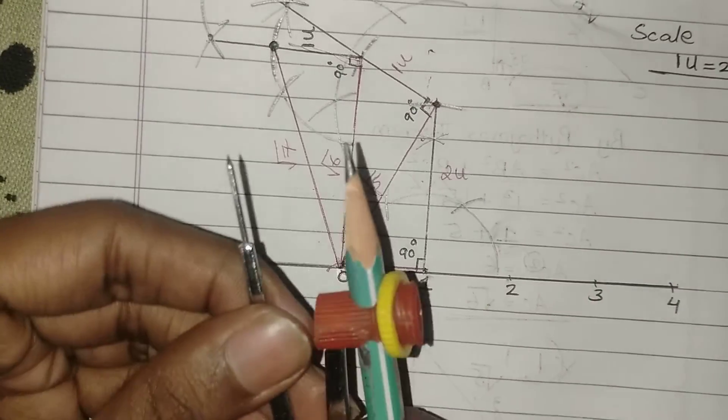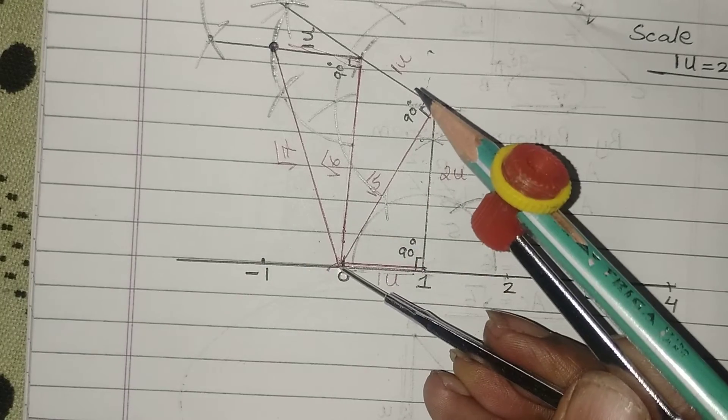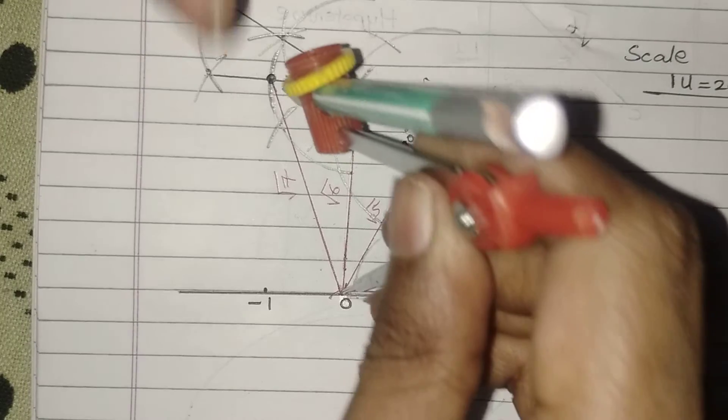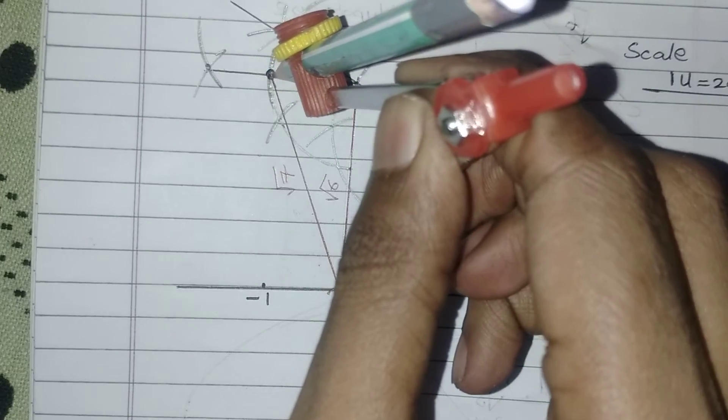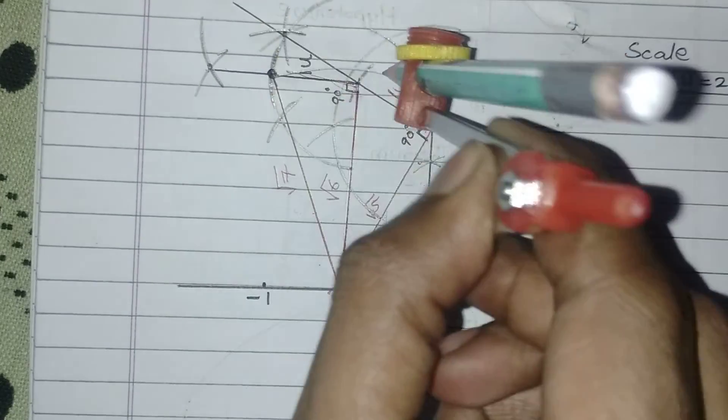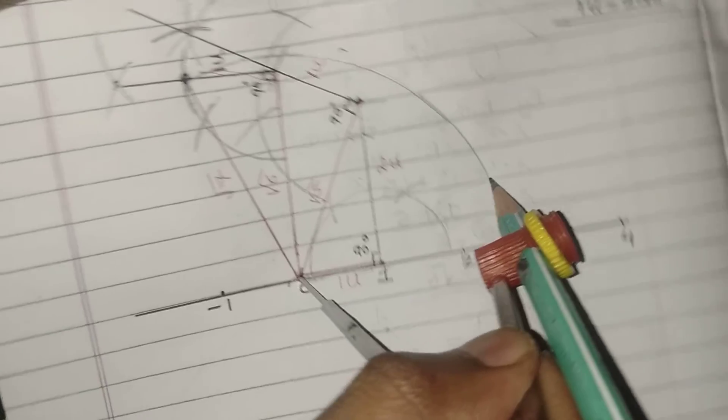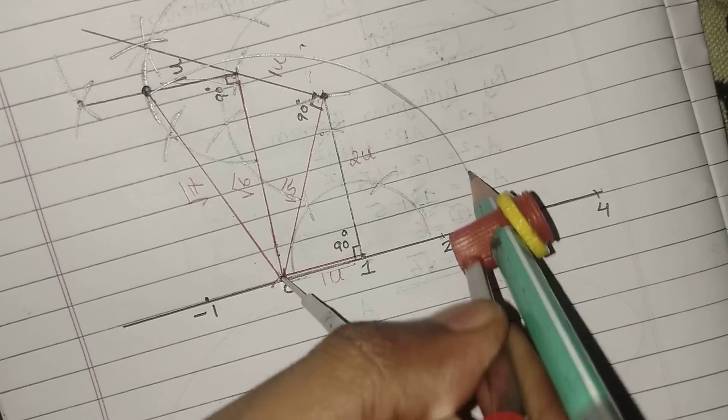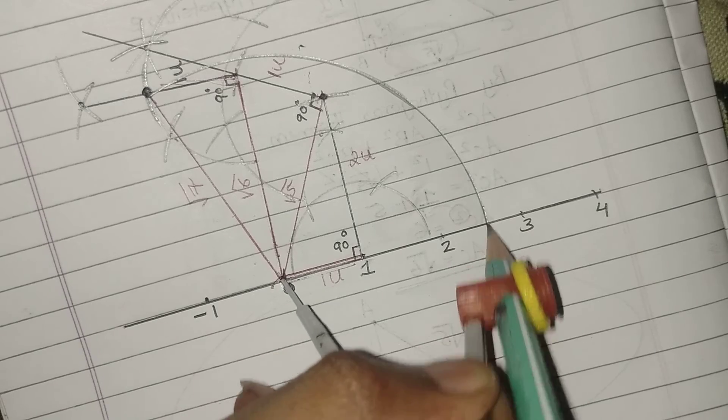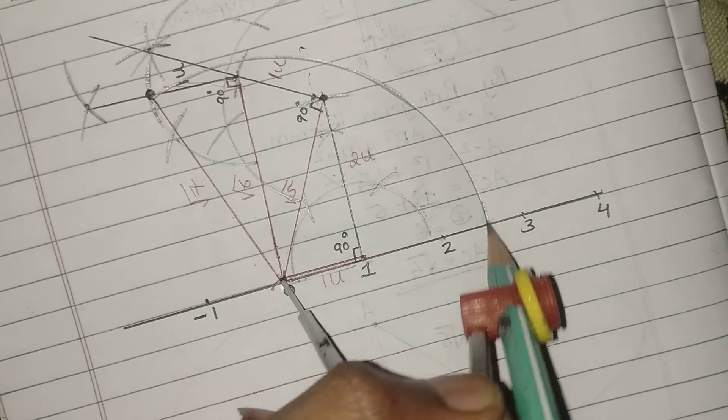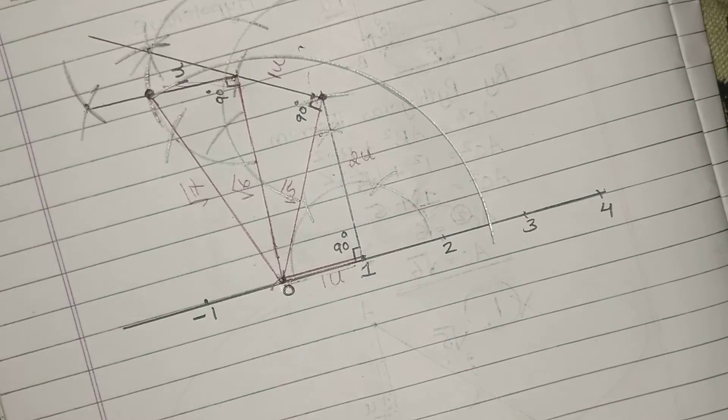Yes, now last step: take the compass, keep the needle at 0 and keep it till 7 like this. Then draw an arc. My pencil is too light, but I think it is visible. Draw an arc like this. Yes, we get root 7 somewhere here. Can you see? We get root 7 somewhere here. That's it.